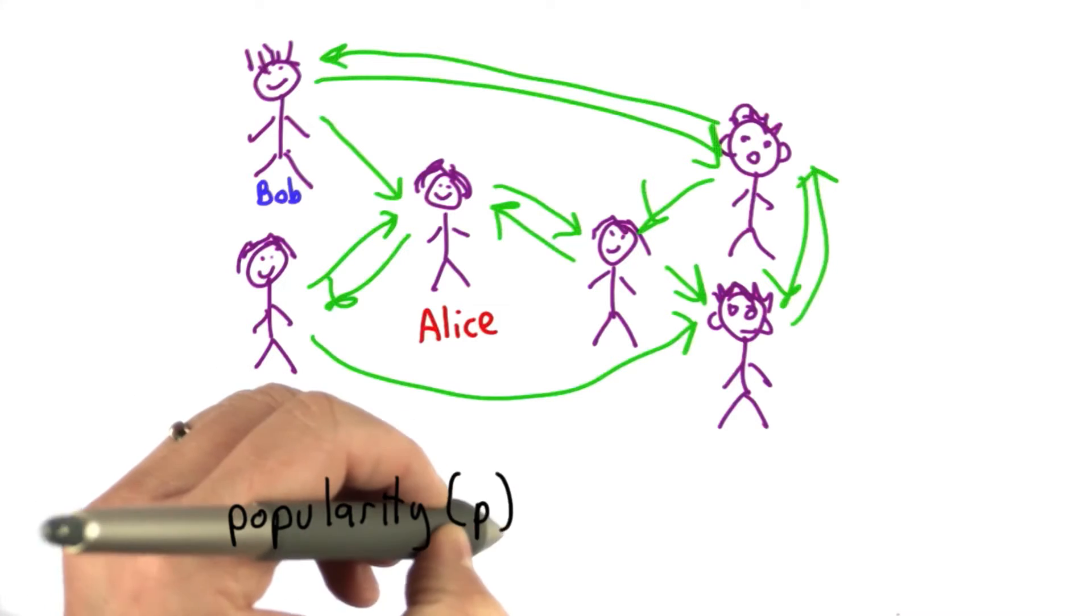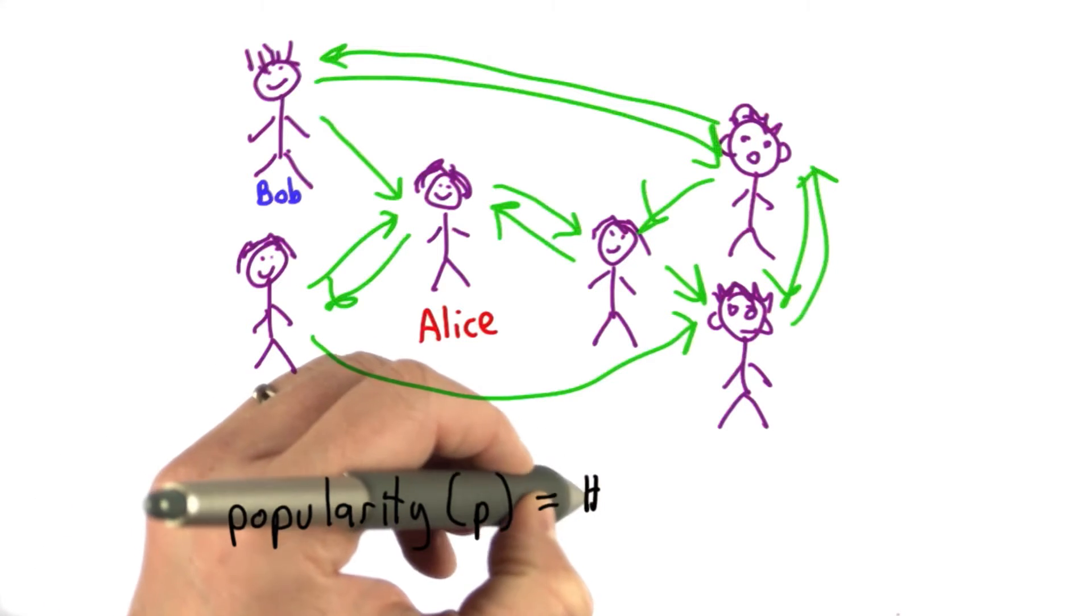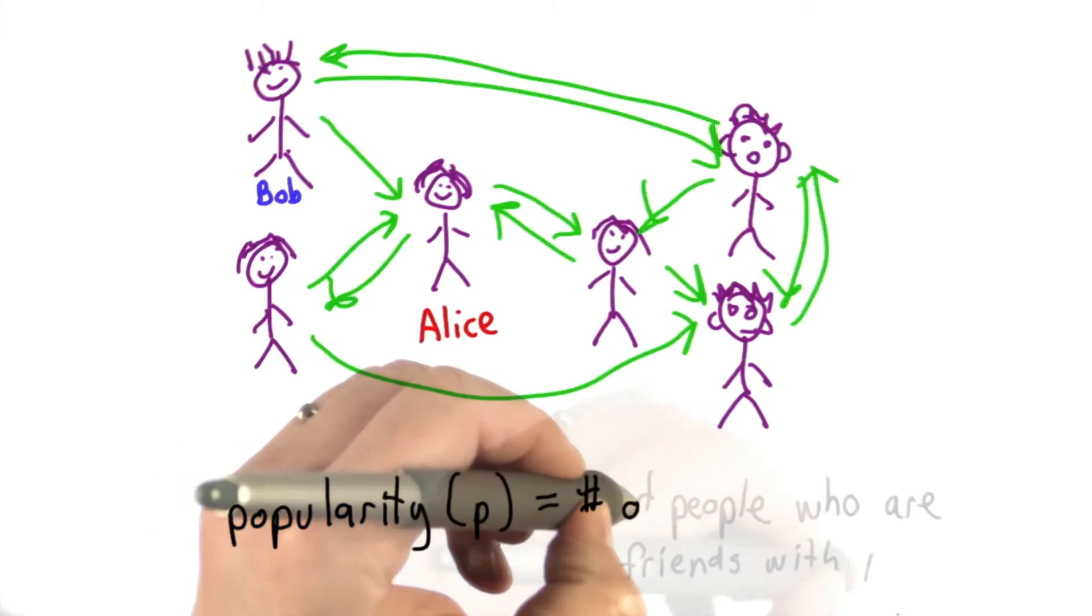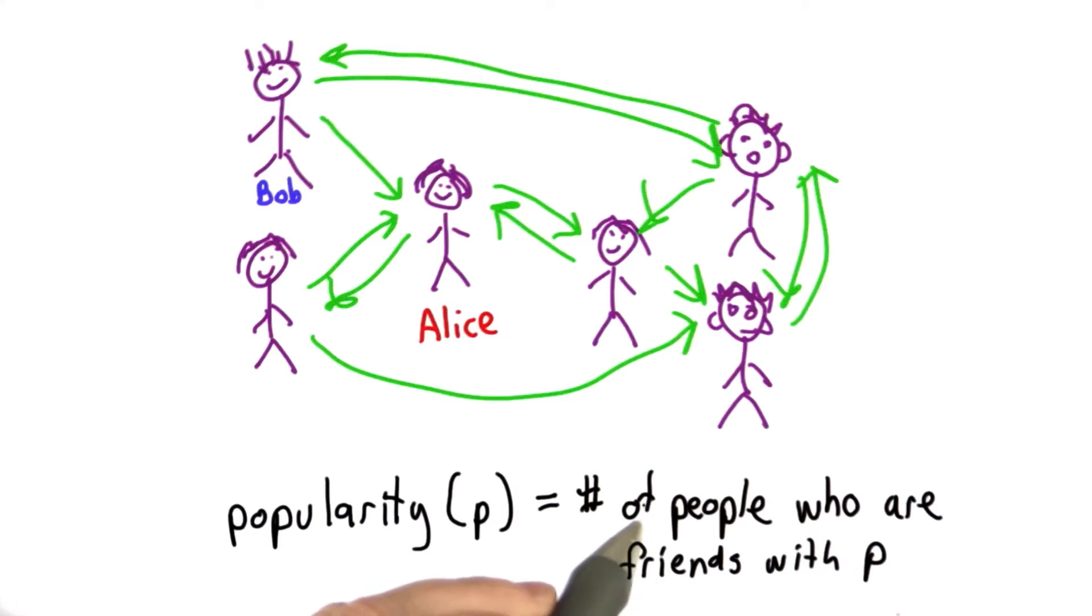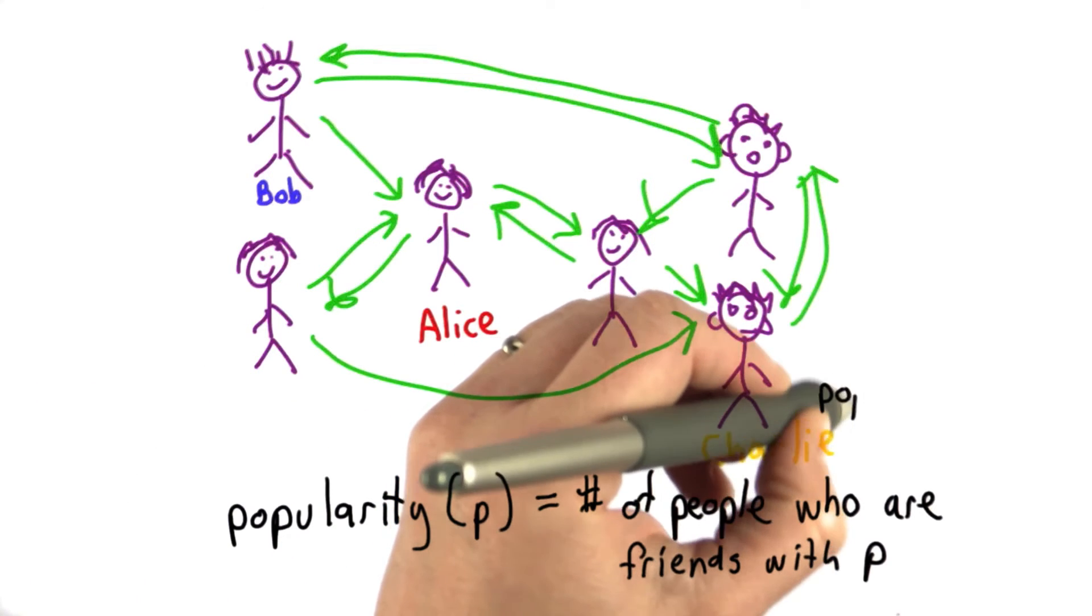So we can define popularity of a person as the number of people who are friends with P. This means the number of links from someone else to that person is their popularity score. So here is Charlie.